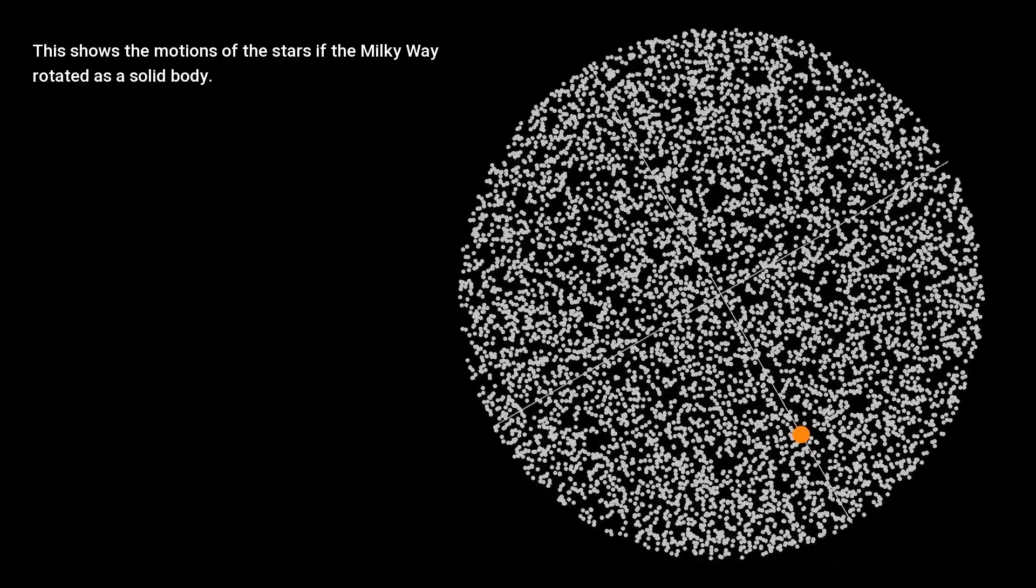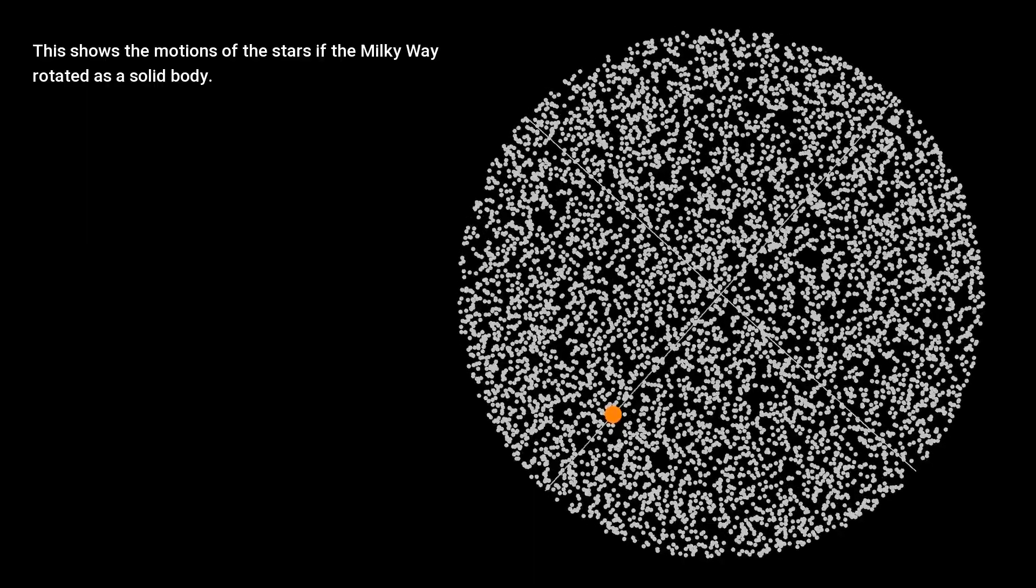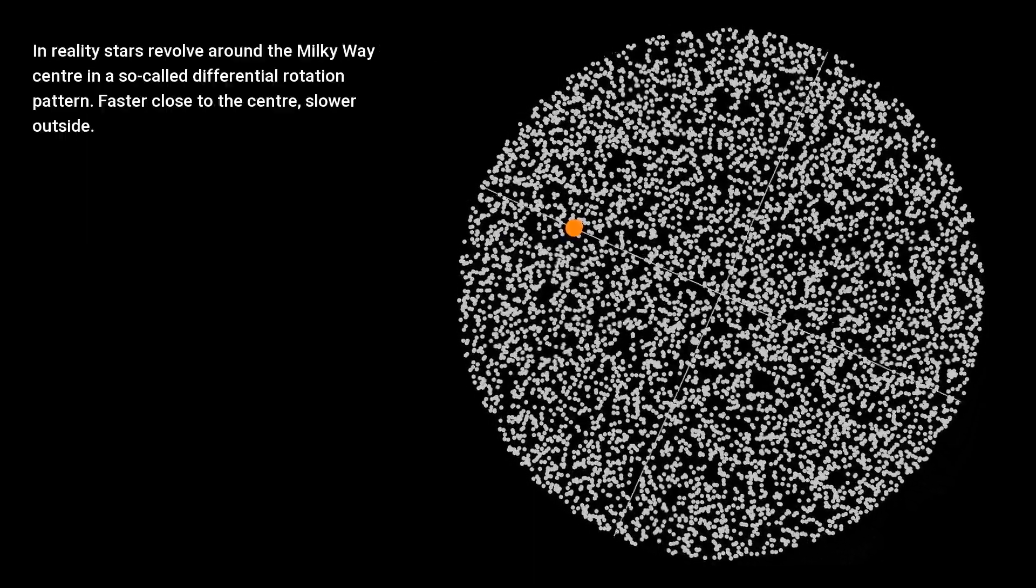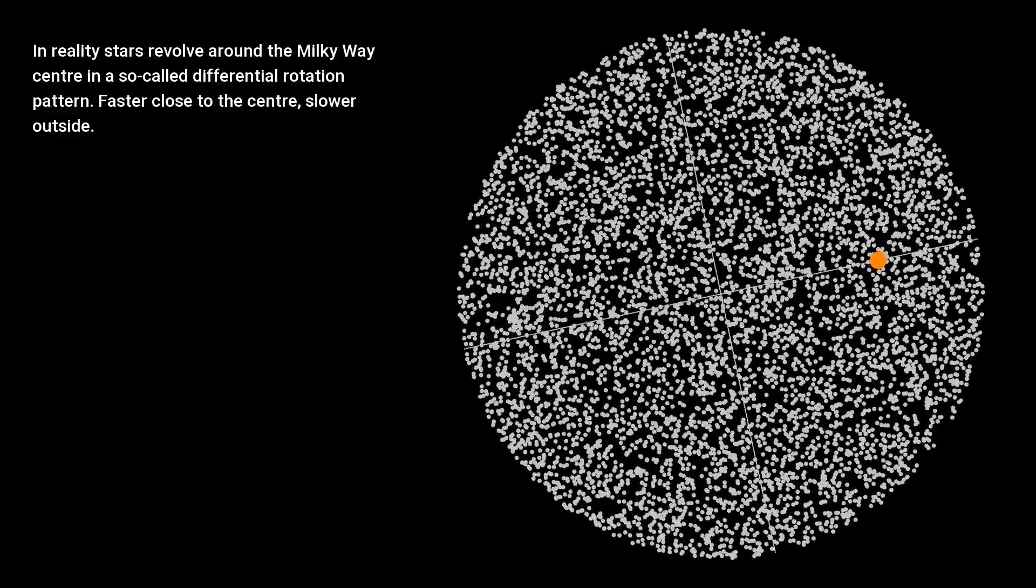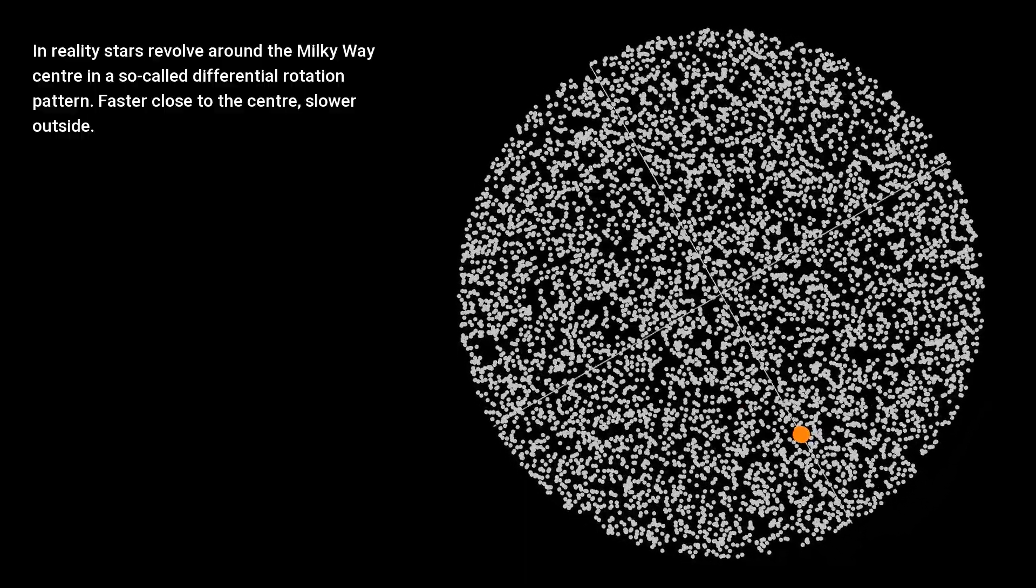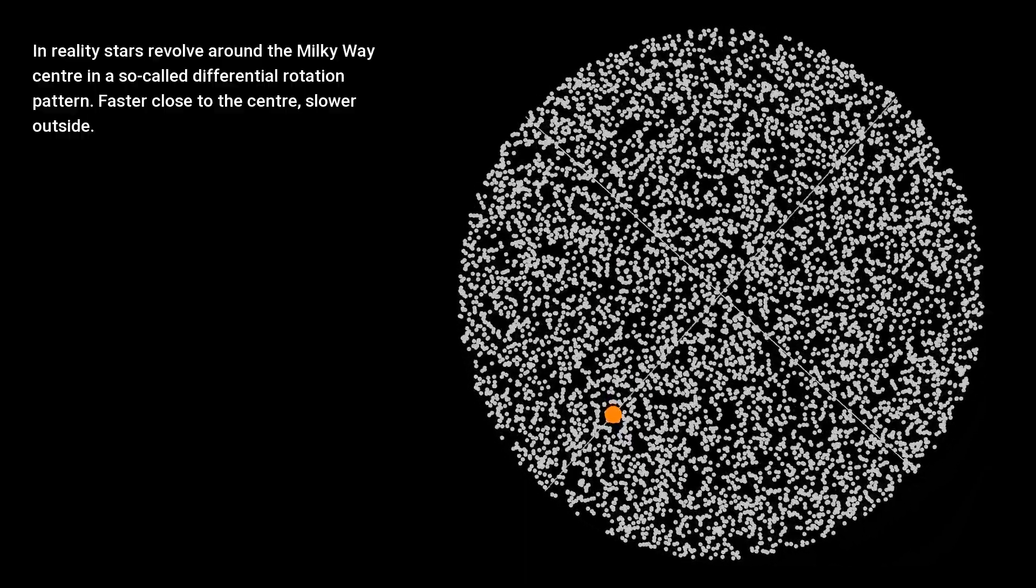This shows the motions of the stars if the Milky Way rotated as a solid body. In reality, stars revolve around the Milky Way center in a so-called differential rotation pattern. Faster closer to the center, slower outside.